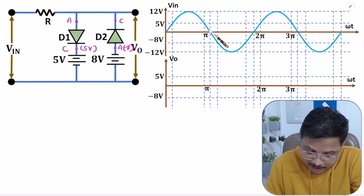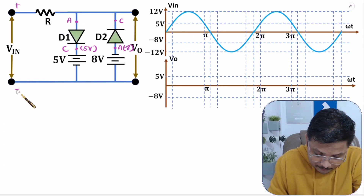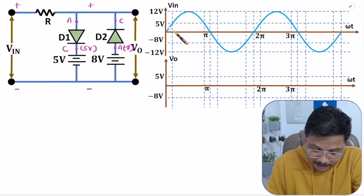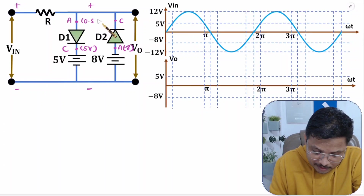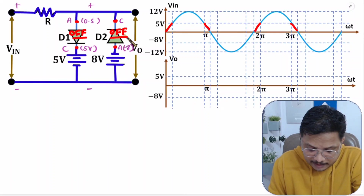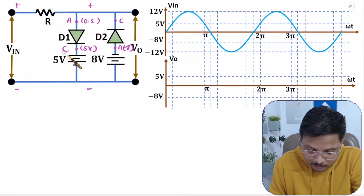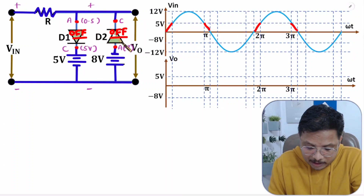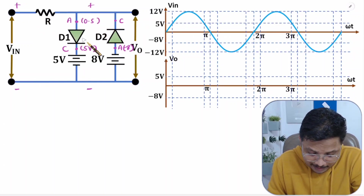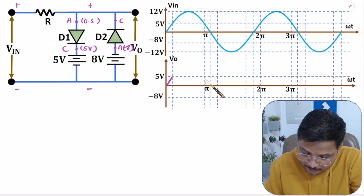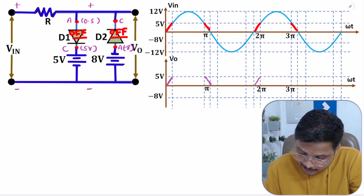In the positive half cycle of V_in, the positive terminal appears here and negative here. During 0 to 5V: the anode of D1 is having 0 to 5V and cathode is at 5V — cathode is greater than anode — so D1 is also off. D2 is also in reverse bias. With both D1 and D2 off, V_in will appear at the output. So during 0 to 5V, input will be appearing at the output.